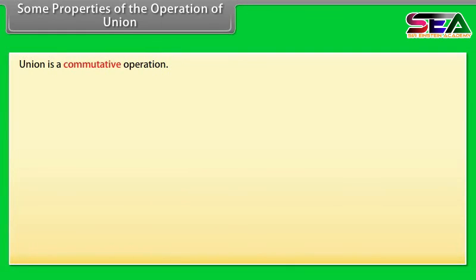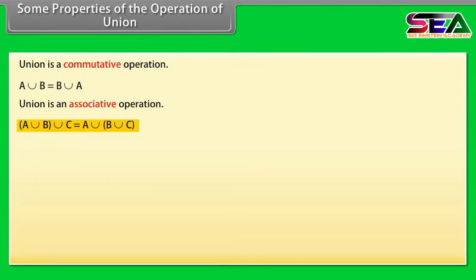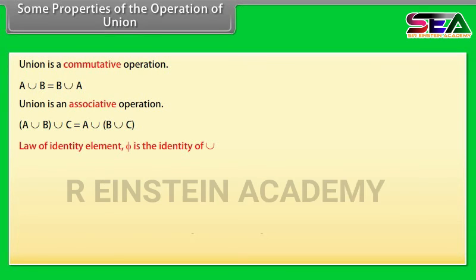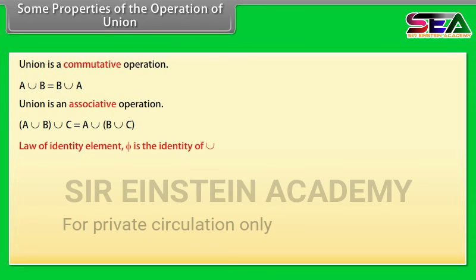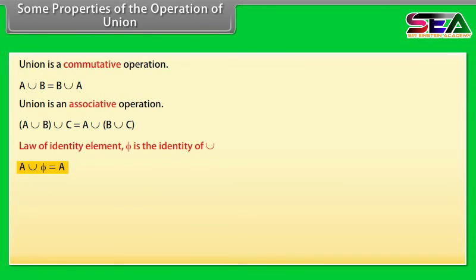Some properties of the operation of union. Union is a commutative operation: A union B equals B union A. Union is an associative operation: A union B union C equals A union B union C. Law of identity element: Phi is the identity of union. A union Phi equals A. The idempotent law: A union A equals A. Law of U: U union A equals U.